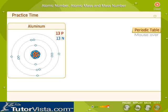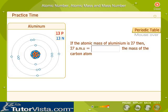Let's quickly recall the meaning of atomic mass unit or mass of an atom. If the atomic mass of aluminum is 27, what does it actually mean?